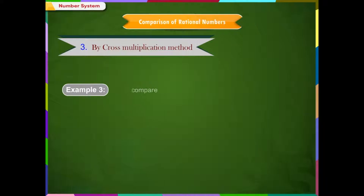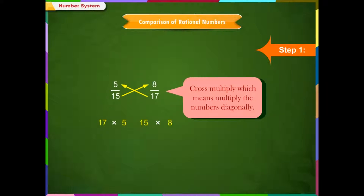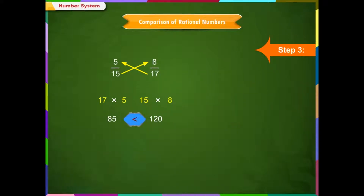Example 3: Compare 5/15 and 8/17 using the cross multiplication method. Step 1: Cross multiply, which means multiply the numbers diagonally. Step 2: Compare. We see that 17 × 5 = 85 and 15 × 8 = 120. Since 85 is less than 120, this is also true for the rational numbers. Step 3: As 85 is less than 120, the first rational number 5/15 is lesser than the second rational number 8/17.